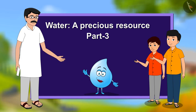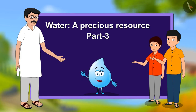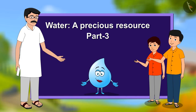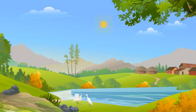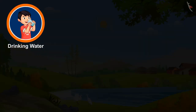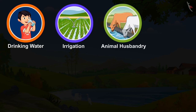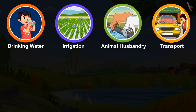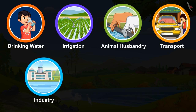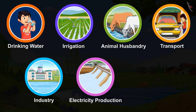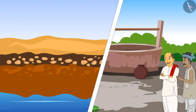Water: a precious resource, part 3. Water is used for various purposes such as drinking, irrigation, animal husbandry, transportation, industry, hydroelectric generation, and fisheries. In villages where even today 80% of people do not have tap water, they have to depend on groundwater for drinking water.